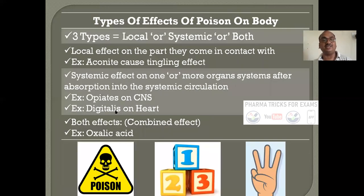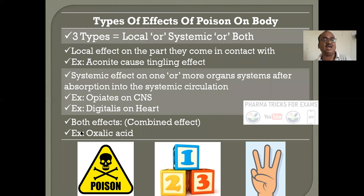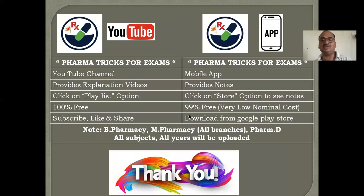Types of effects of poison on the body — three types: local, systemic, or both. Local effects example: aqua regia causes tingling of the local part of the body. Systemic means it enters into the bloodstream and shows action — opiates on CNS, digitalis on the heart. Both effects — for example oxalic acid shows combined local and systemic action.